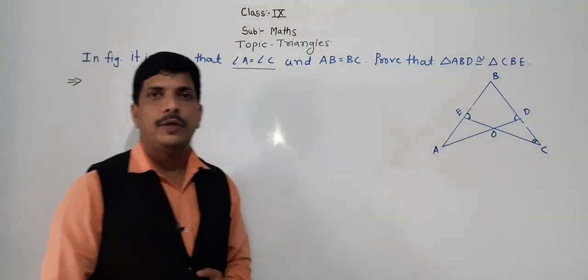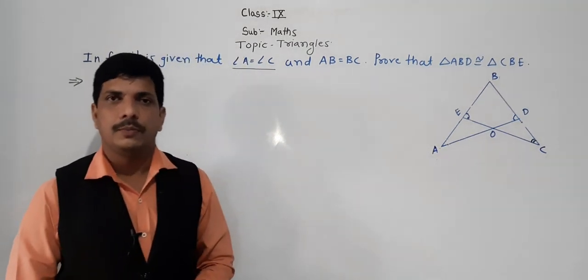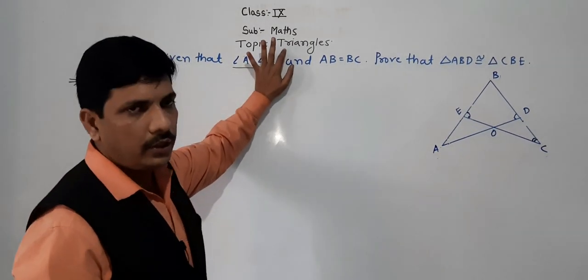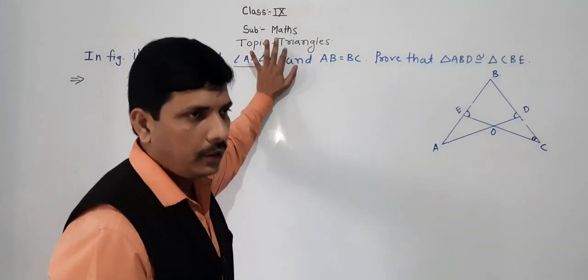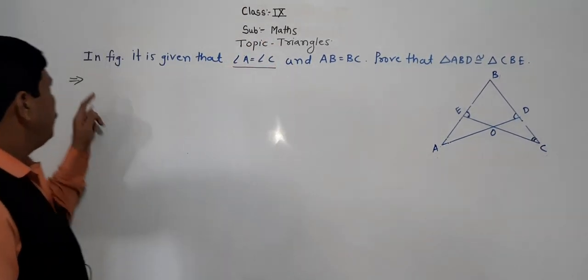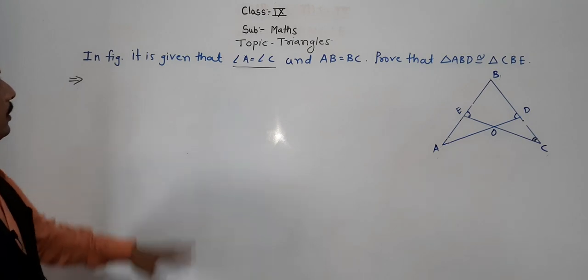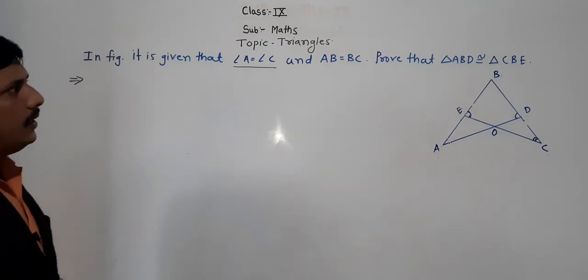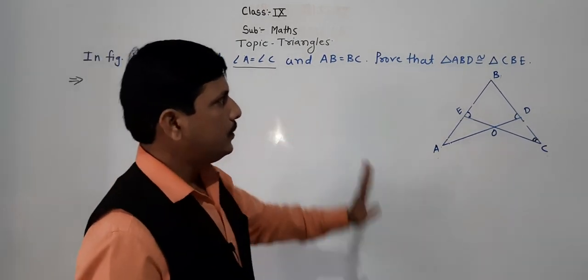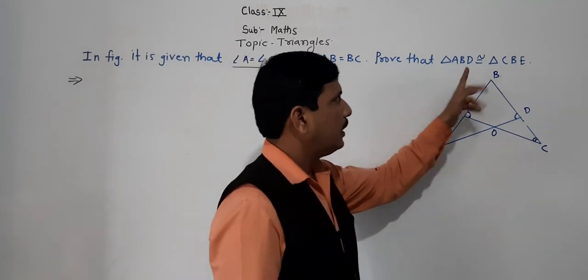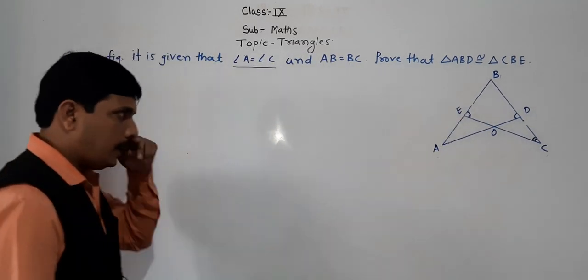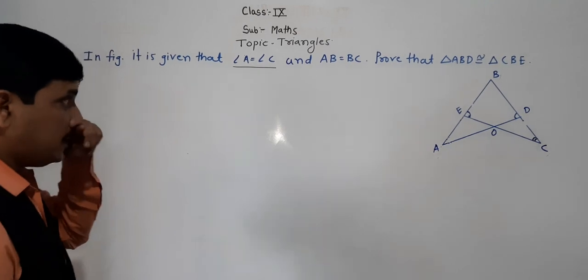Hello everybody. Today we are going to see some problems which depend on the concept of triangles. We have already seen some problems. Today's first problem is: in the figure it is given that angle A is equal to angle C, and AB is equal to BC. Through that, prove triangle ABD is congruent to triangle CBE.